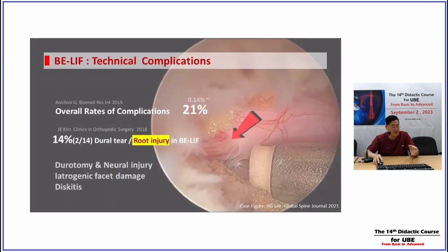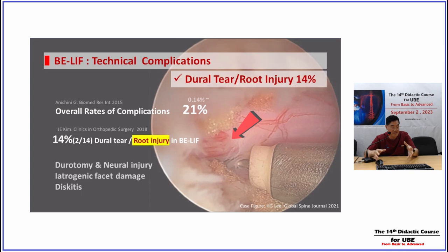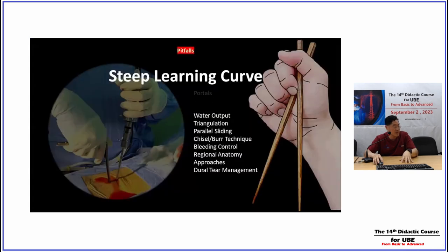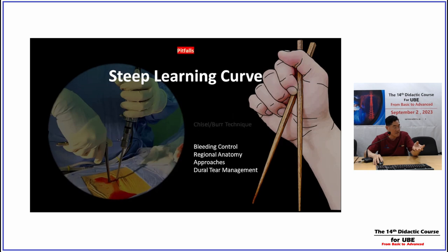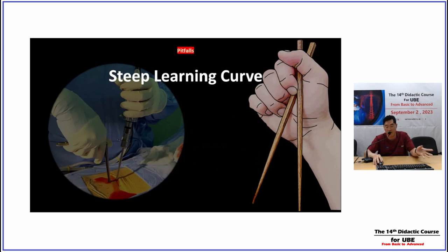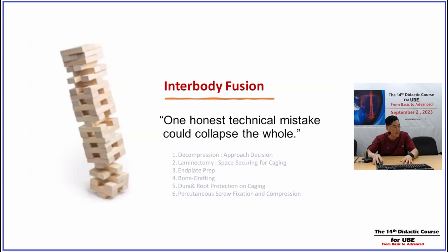Still working in a very narrow space handling big devices and a big cage creates a high risk of direct nerve root injury. We should learn water control, triangulation, sublaminar decompression, chisel ball technique, bleeding control, and we must understand regional anatomy. We should choose the approach correctly, and if there is dural injury we must manage it. There are many things to learn before starting endoscopic TLIF. If there is one miss, the clinical result of the fusion will not be good.